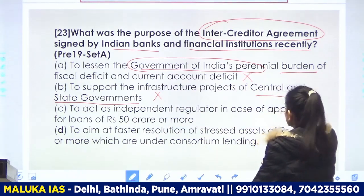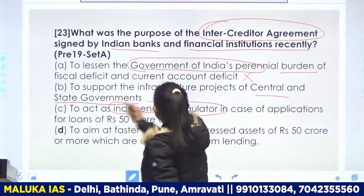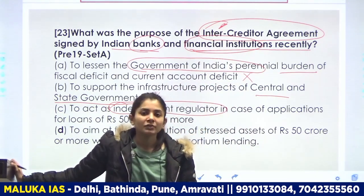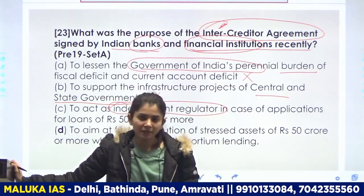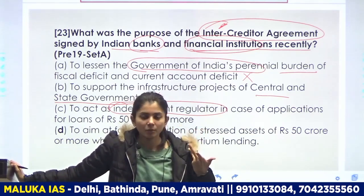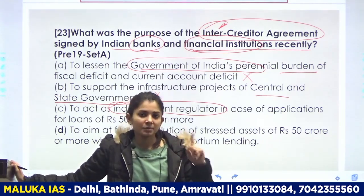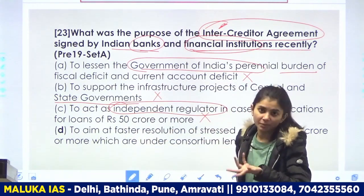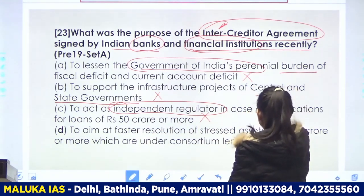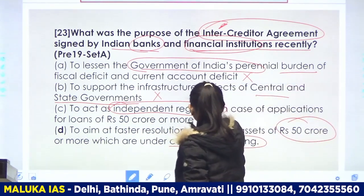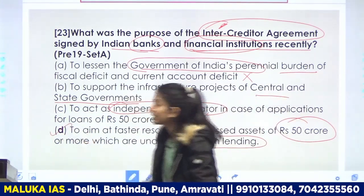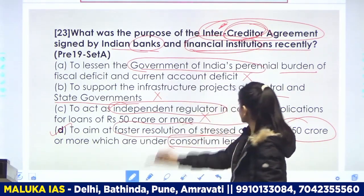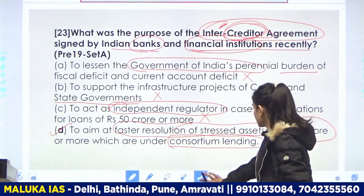Third option: to act as independent regulator in case of application for loan of 50 crore or more — अगर independent regulator बनना होता तो उस banks और financial institutes के agreement में permission किसकी होती? Who is the banker of the bank — Reserve Bank of India। Banks खुद से agreement करके यह नहीं कह सकते कि हम regulator भी होंगे, क्योंकि final permission RBI की तरफ से आएगी। So बचता है D — to aim at faster resolution of stress assets of rupees 50 crore or more under consortium lending। यह related है credit system से — faster resolution of stress assets — so D is the right answer।